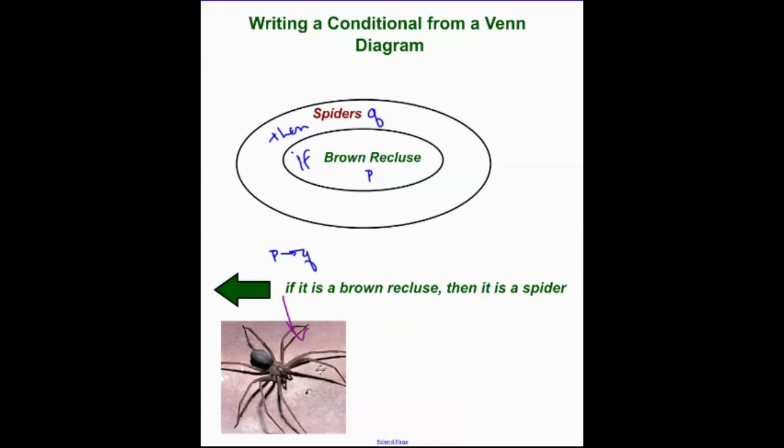This is a brown recluse. Do not get bit by it. They have a pretty nasty reputation because they can be bad for you if you get bit. Most people get a little bit of rash. Some people, their legs fall off. Their flesh eats away. They're pretty nasty, but they're not that aggressive. Just don't get bit by one.